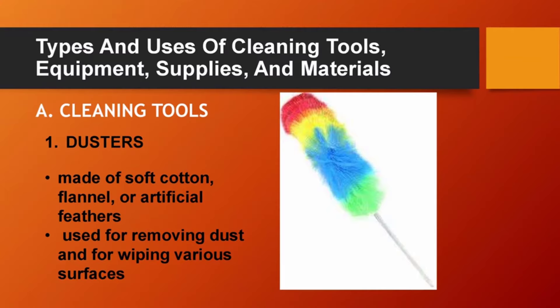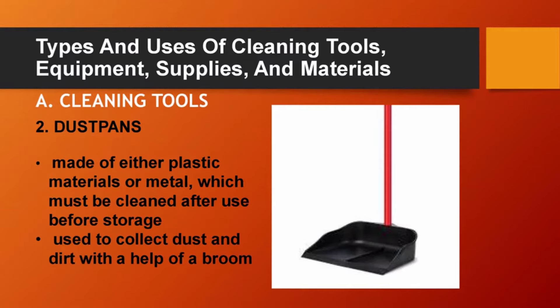Cleaning tools. Number 1: Dusters, made of soft cotton, flannel, or artificial feathers. Used for removing dust and for wiping various surfaces. Two: Dust pans, made of either plastic materials or metal, which must be cleaned after use before storage. Used to collect dust and dirt with the help of a broom.